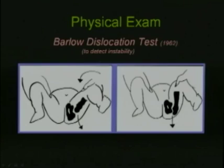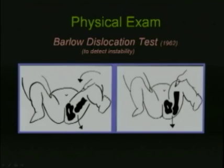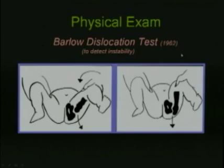The other test is the Barlow dislocation test, described in 1962 by Dr. Barlow, which is used to detect hip instability. The knee is adducted and a pistoning maneuver is done, applying gentle pressure against the femoral head by pushing the hip posteriorly and releasing it, to determine whether there is a sense that the hip is unstable.